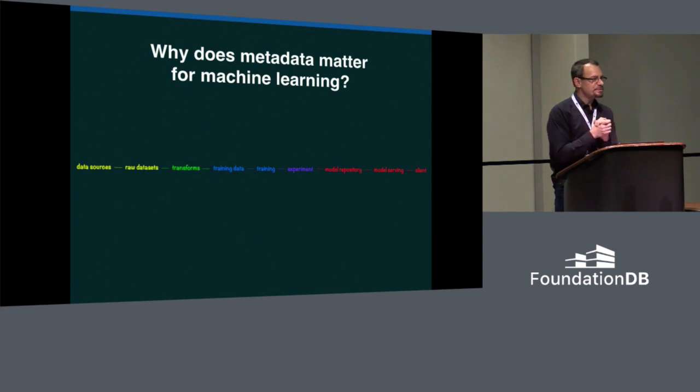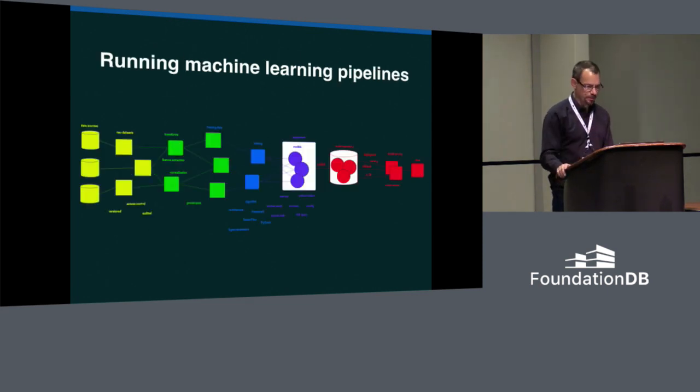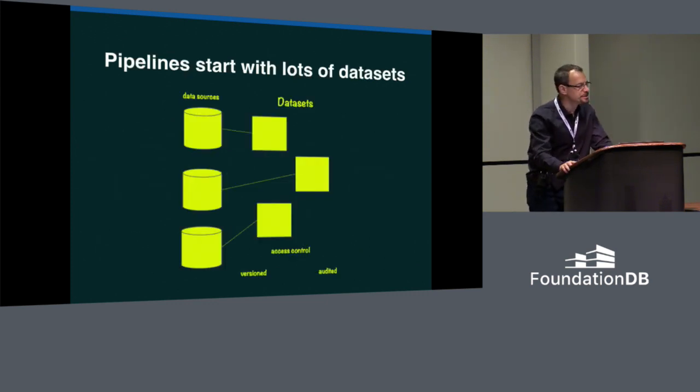So why does metadata matter for machine learning? Say you're running machine learning pipelines on a cloud platform for lots of users. The number of users is large, and they span a diverse range of use cases and teams. Pipelines start with datasets. The datasets are many, varied, and usually raw. There are often requirements around who is allowed to see which parts of which datasets.